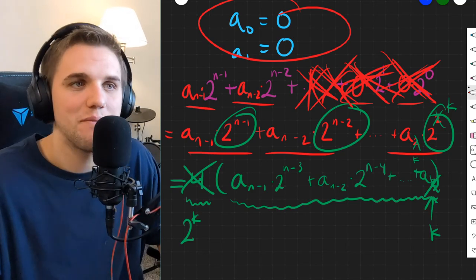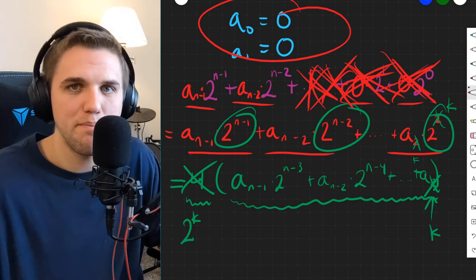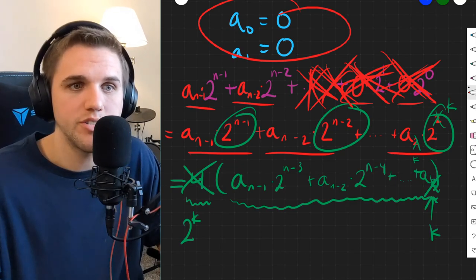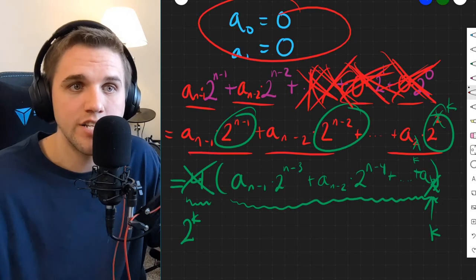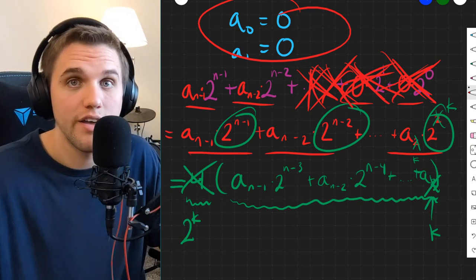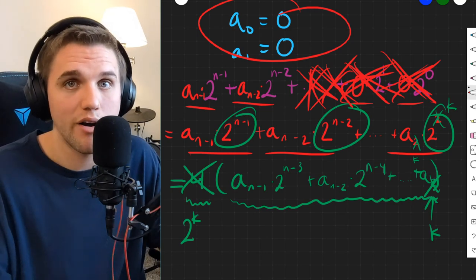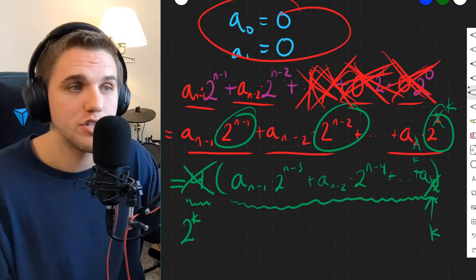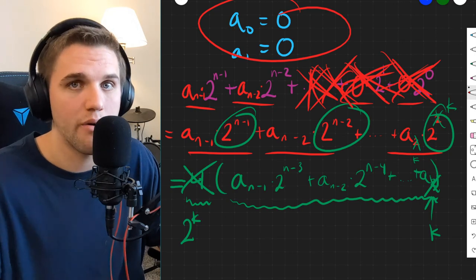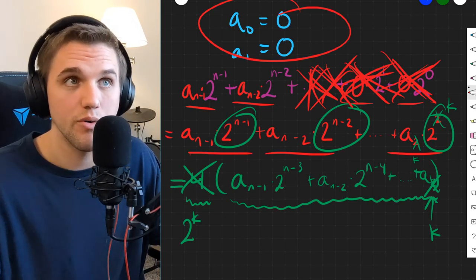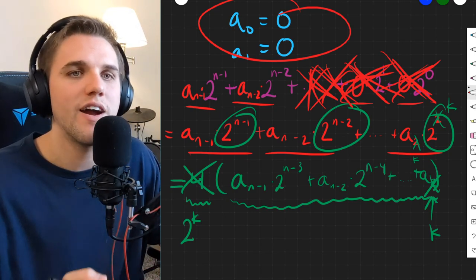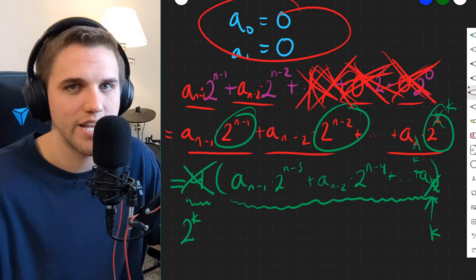And so if we end in k zeros, that means that that number is divisible by 2 to the power of k, which is pretty cool. And that works very similarly in base 10. If you end in three 0s, that means you're divisible by 10 to the third power. If you end in four 0s, you're divisible by 10 to the fourth power. If you end in five 0s, you're divisible by 10 to the fifth power, and so on. So the way it works in base 2 is very similar to the way it works in base 10 as well.